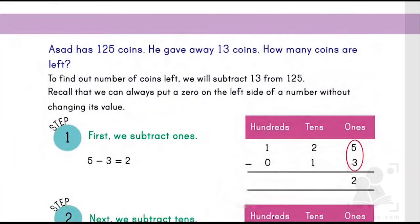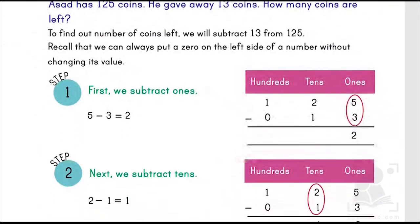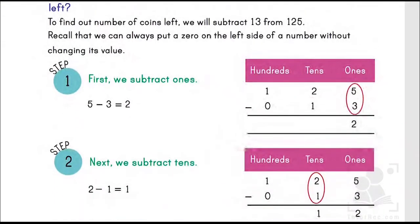Another example says Asad has 125 coins. He gave away 13 coins. Now how many are left? What we have to do is 125 minus 13. Remember kids, when you have to subtract, you put the biggest number at the top: 125 minus 13.